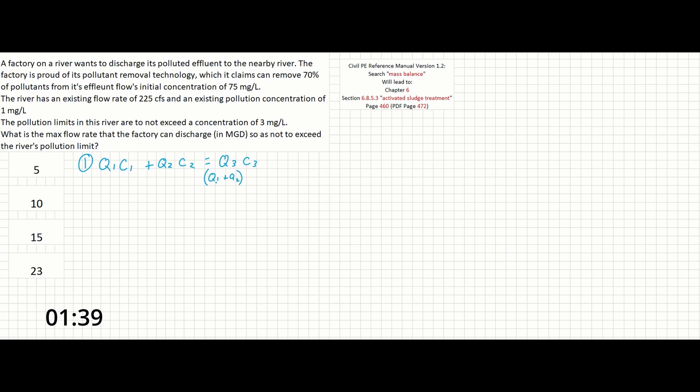So let's get into the problem. The question is asking us to find the max flow rate exiting the factory that will not cause the in-river pollution to exceed 3 milligrams per liter. So let's start filling in our knowns and then see what is left. q1 is what we are solving for, so let's leave it as a variable.